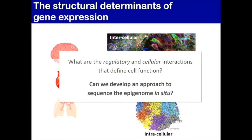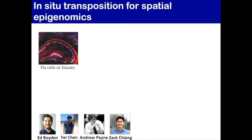The central question — and I think it's kind of the question of life — is: what are the regulatory and cellular interactions that define cell function? We don't really have a lot of tools to give us this physical perspective. Given some technological advances and the experiences from Fei Chen and my own, we thought we might be able to develop an approach to sequence the epigenome directly inside the cell. This is work we would not have done without the funding support from Paul Allen, as it was a bit too risky at this stage of our careers.